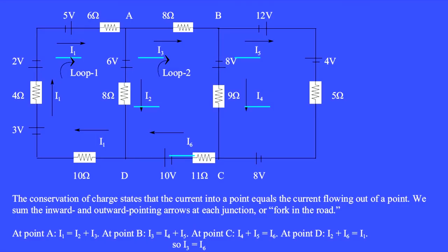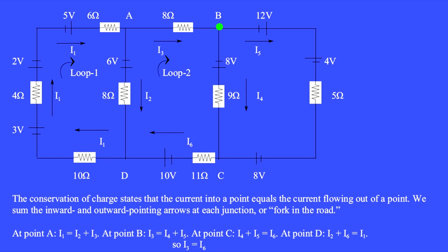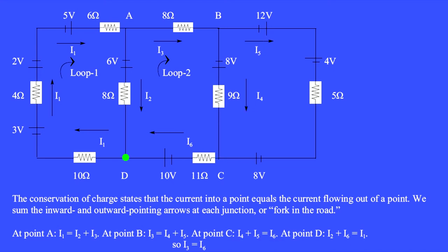This circuit has 6 wires, and so there are 6 different currents, I1 through I6. We first write as many conservation of charge equations as possible. At point A, the current arrow I1 points inward, and the outward arrows are I2 and I3, so we have I1 equals I2 plus I3. At point B, the inward current I3 equals the outward currents I4 plus I5. At point C, the inward currents I4 plus I5 equals the outward current I6. At point D, I2 plus I6 equals the current I1 that points outward. Comparing the equations at points B and C, we see that I3 equals I6.